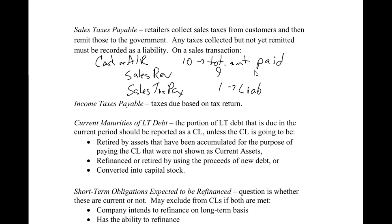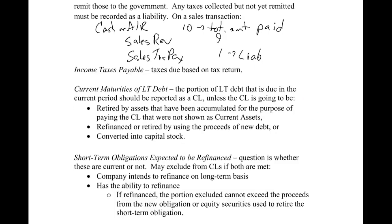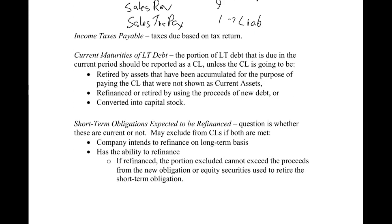Income tax payable involves taxes due based on the difference between financial accounting and tax accounting. There's a whole chapter devoted to that, so we'll cover it in detail when we get to the deferred tax chapter. Current maturities of long-term debt is the portion of long-term debt that is due in the current period — meaning in the next 12 months. That portion would be broken out of the long-term liability and put in the current portion, with the remainder staying in long-term. Each year, the next 12 months gets moved into current until it's finally all paid off.